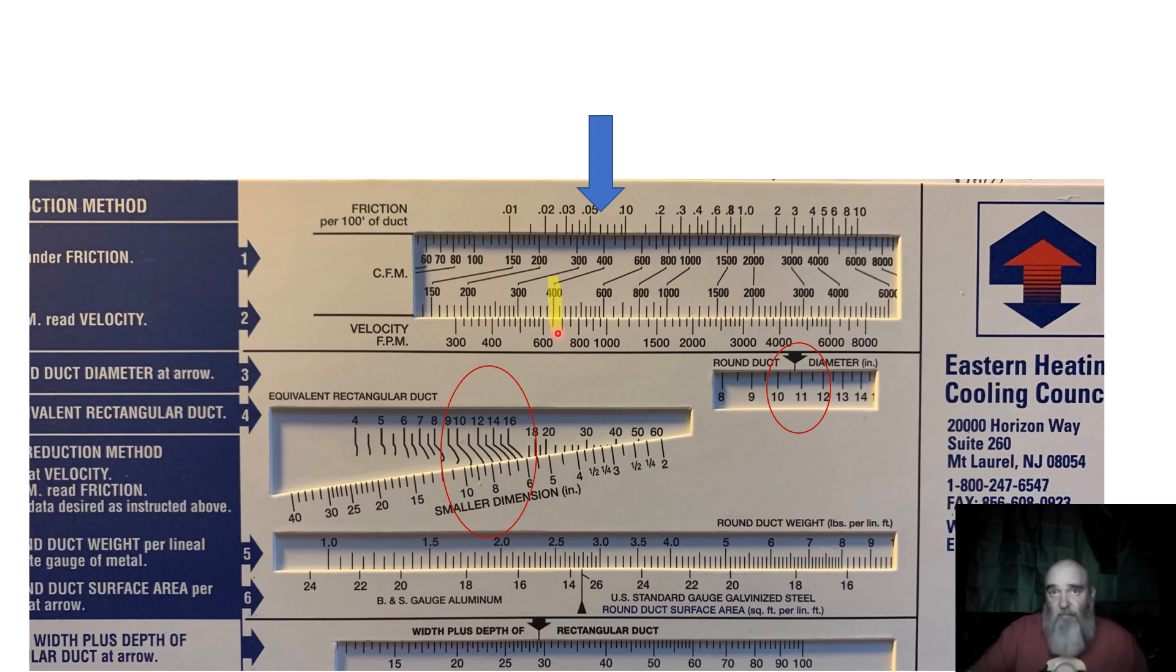I drop 100 or 200 feet per minute off of that because that's where I like to size my ductwork. It's not really what we're trying to talk about tonight. But with my ductulator set here, I'm going to say I need a piece of 12 by 8 at a 0.066 friction to give me 400 CFM at a velocity of 650 feet per minute.